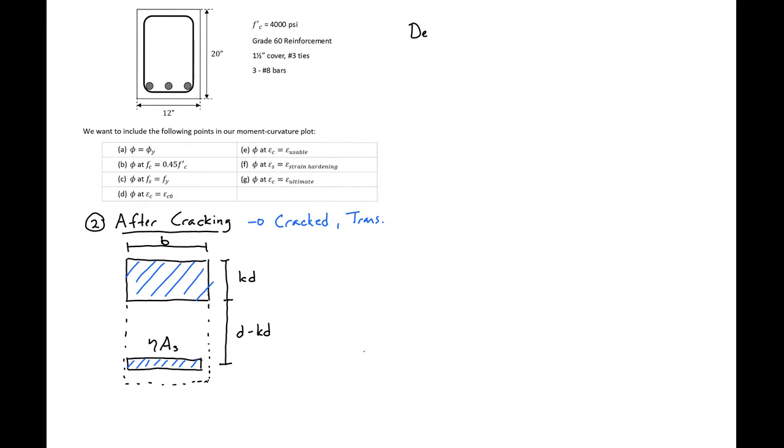We'll determine our value kd or the depth of our neutral axis here. From mechanics we know that our neutral axis is located at the centroid for elastic behavior. This will translate to b times kd times the distance from the centroid of our area here to our neutral axis. We're looking for this distance here, which is kd over 2.